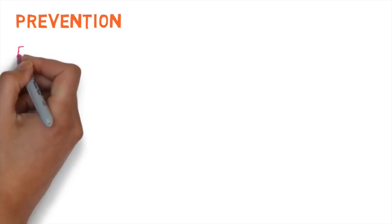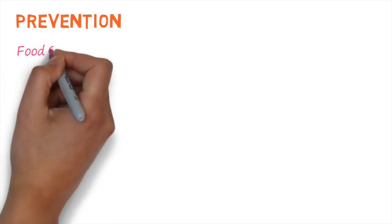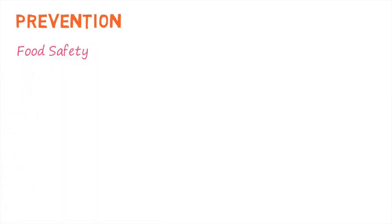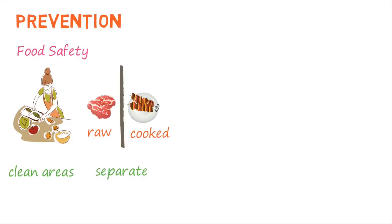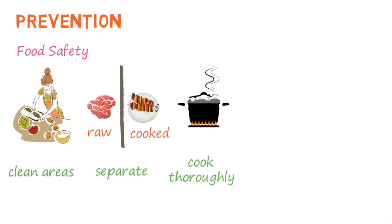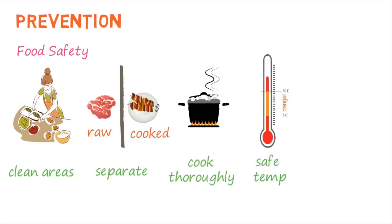Because Salmonella is mainly a foodborne disease, one of the most important ways of preventing Salmonella is ensuring the safety of food. There are a number of ways this can be achieved, including making sure food preparation areas are clean, separating raw and cooked food to prevent cross-contamination, cooking food thoroughly, and keeping food at the correct temperature.